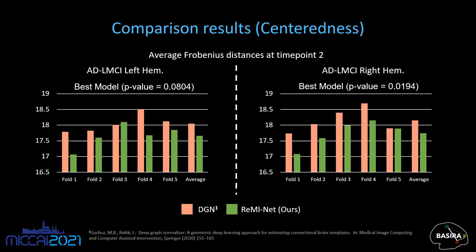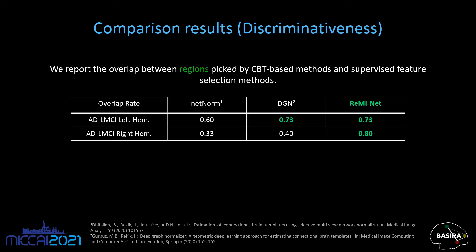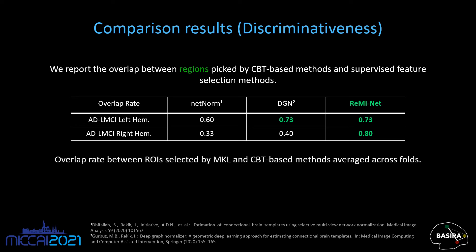We compare our results by measuring the average Frobenius distance between the population subjects and the estimated CBT for both datasets, right and left hemispheres separately. We evaluate our model by selecting the best model across epochs with an early stopping strategy, since model parameters and convergence epochs differ. Note that DGN needs information at time point 2, whereas REMINET uses only the baseline time point, which is time point 1. We report the overlap rate between regions picked by CBT-based methods and supervised feature selection methods. Our proposed model is significantly more reproducible in discriminability than NetNorm for both hemispheres and than DGN for the right hemisphere.